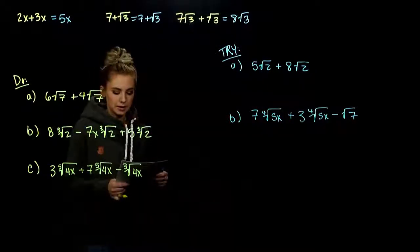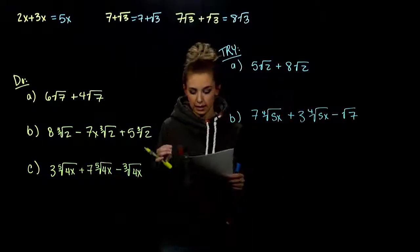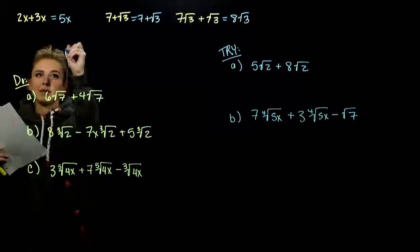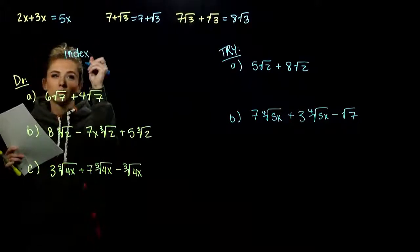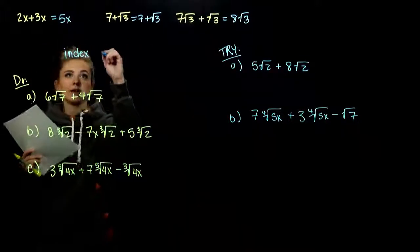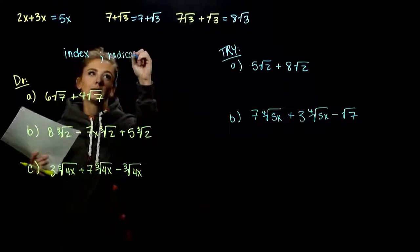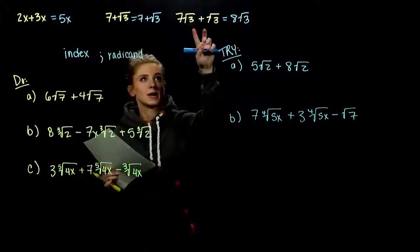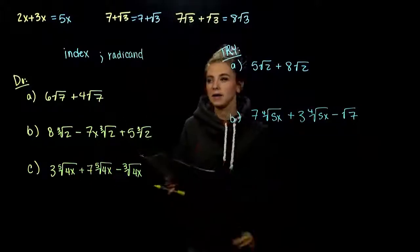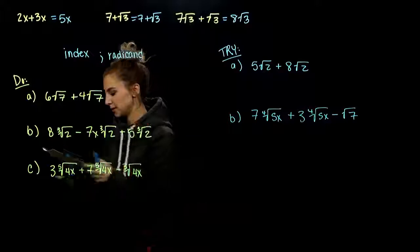In order to combine radicals, they have to be alike. Like radicals must have the same index — we're taking the same root — and the same radicand, the same number underneath. They have to match exactly on the index and exactly on the inside as well. Let's look at some examples.